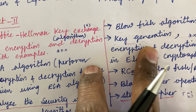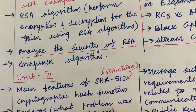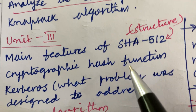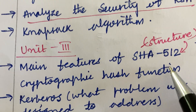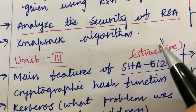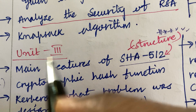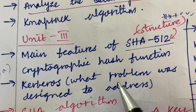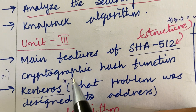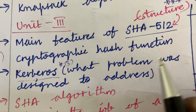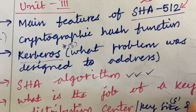Make sure the pattern is all about Part A and Part B — you need to work on the short questions from this as well. Let's jump into Unit 3. Unit 3 covers message digest and its structure. The main features of SHA-512 are said to be a very important and certain question — that may be a 6A question this time. Using the cryptographic hash function, and Kerberos — what problem was Kerberos designed to address — and the SHA algorithm may be 3-mark questions.